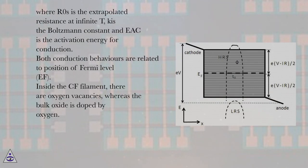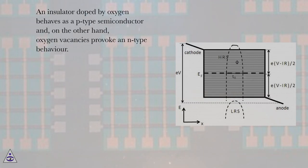Where R0s is the extrapolated resistance at infinite T, K is the Boltzmann constant and EAC is the activation energy for conduction. Both conduction behaviors are related to position of Fermi level EF. Inside the CF filament, there are oxygen vacancies, whereas the bulk oxide is doped by oxygen. An insulator doped by oxygen behaves as a P-type semiconductor and, on the other hand, oxygen vacancies provoke an N-type behavior.